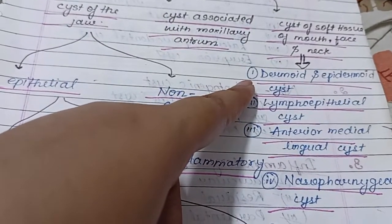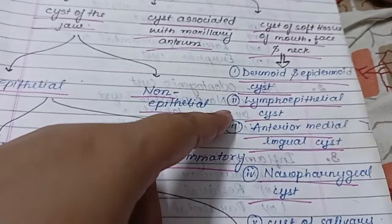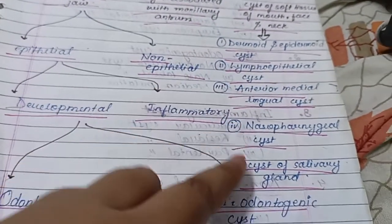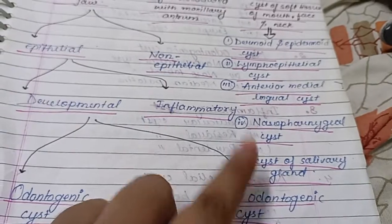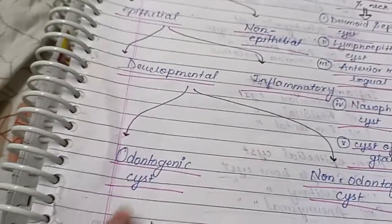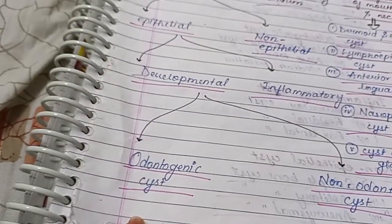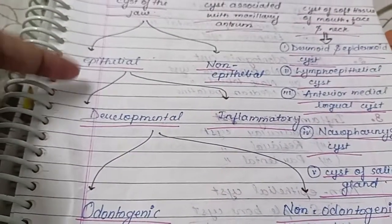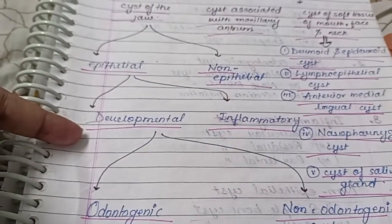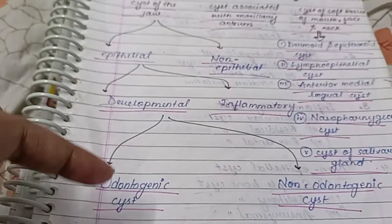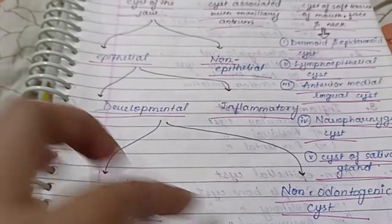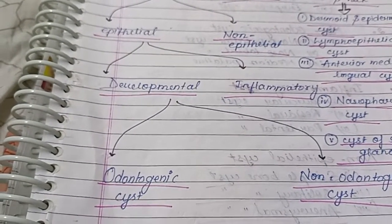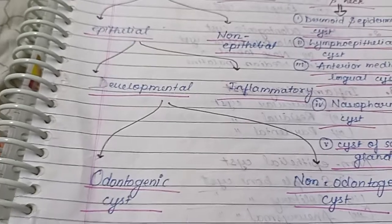These are: dermoid and epithelial cysts, lymphoepithelial cysts, anterior and medial lingual cysts, nasopharyngeal cysts, and cysts of the salivary gland. The most important are odontogenic cysts and non-odontogenic cysts. Epithelial divides into developmental and inflammatory, and developmental further divides into odontogenic and non-odontogenic. Let's start with odontogenic cysts.